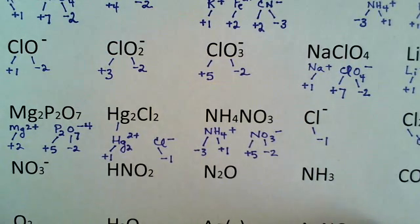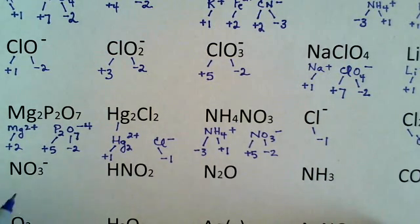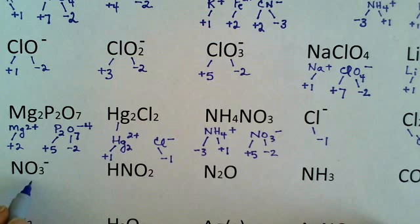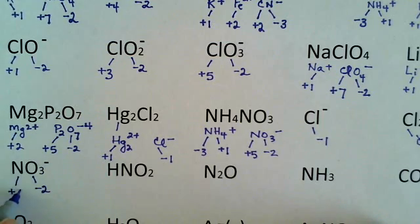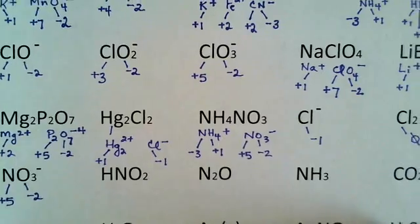There's nitrate all by itself. Oxygen is minus 2 times 3 is minus 6. Overall minus 1, so nitrogen must be a plus 5. That's my nitrate ion.